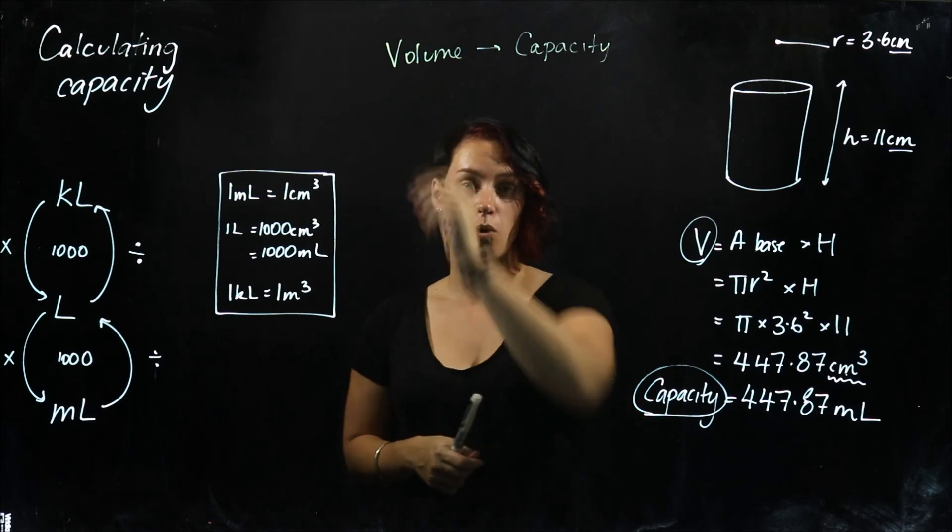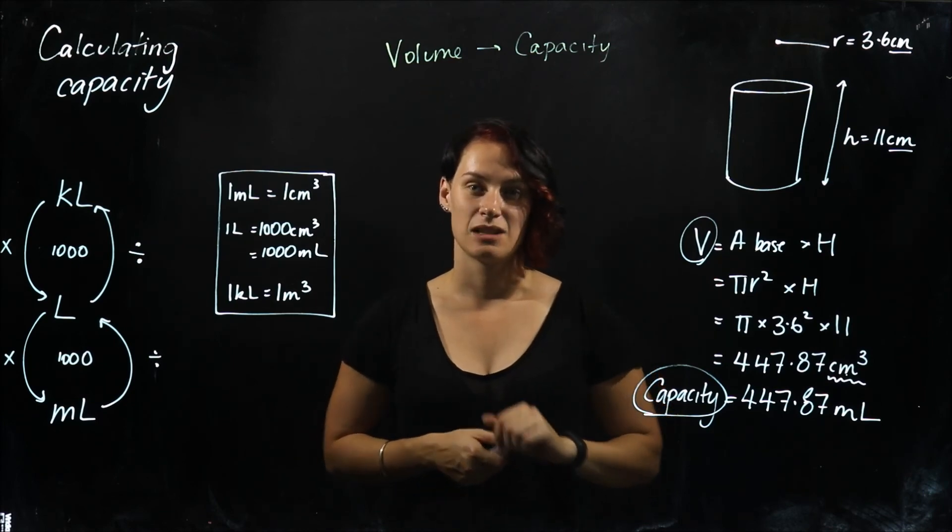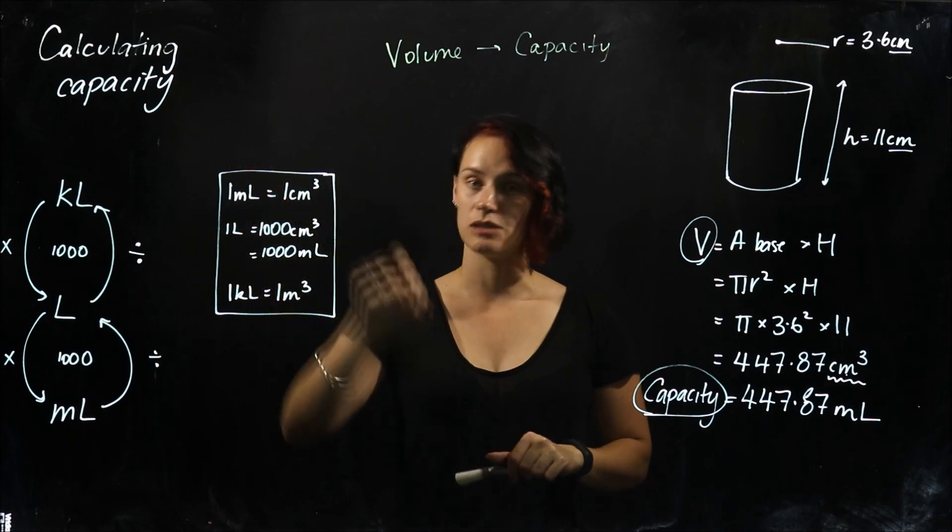So first step, always find volume, and then always find capacity straight after using these rules.